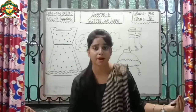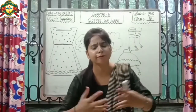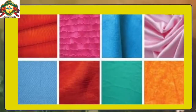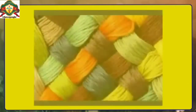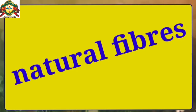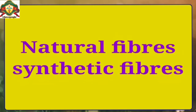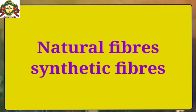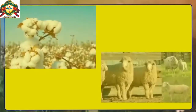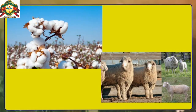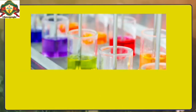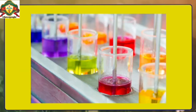The clothes we wear are made from different kinds of fabric. Fabric is obtained from fibers. Fibers are of two types: natural fibers, which we get from plants and animals, and synthetic fibers, which are made through chemicals by man.